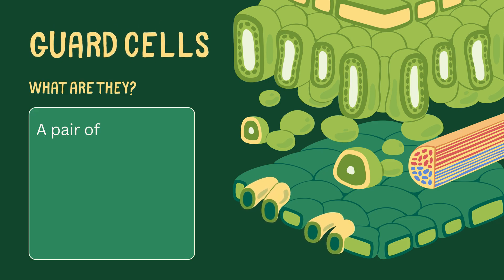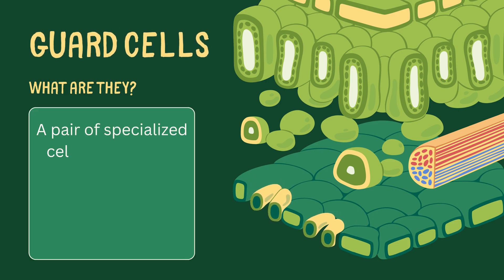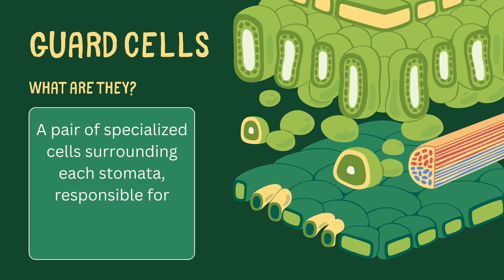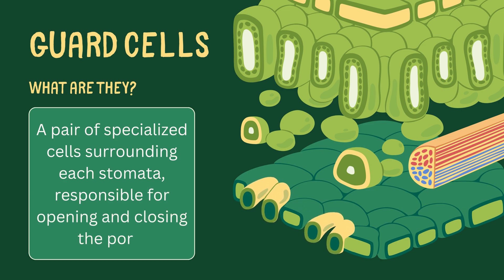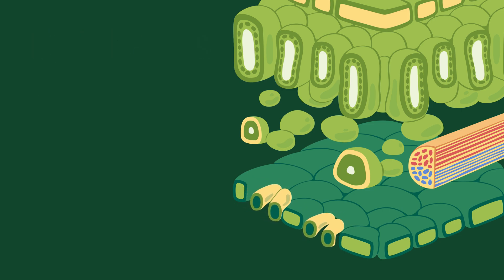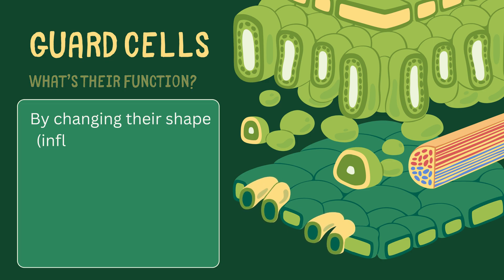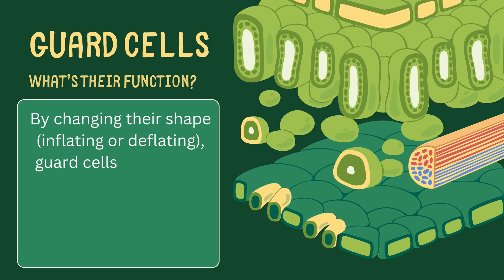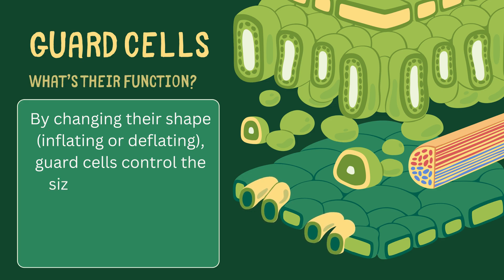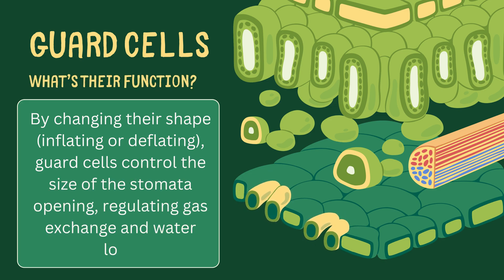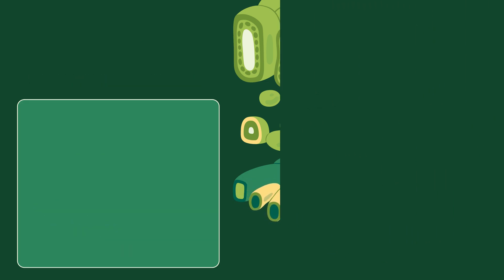Guard cells. A pair of specialized cells surrounding each stomata, responsible for opening and closing the pore. By changing their shape — inflating or deflating — guard cells control the size of the stomata opening, regulating gas exchange and water loss.